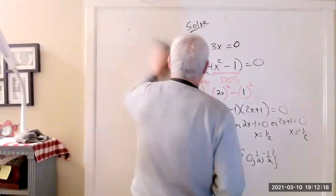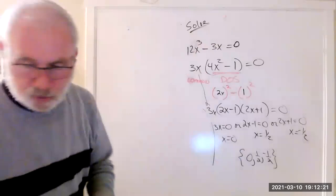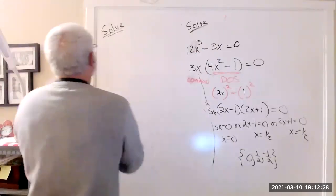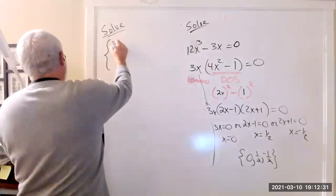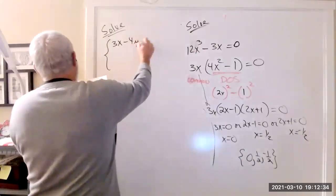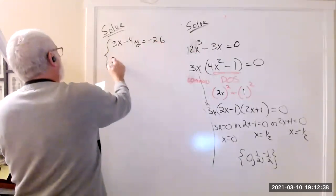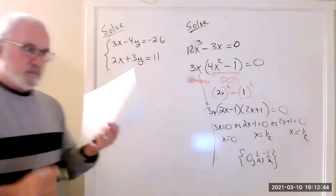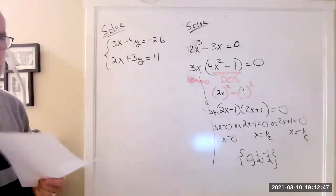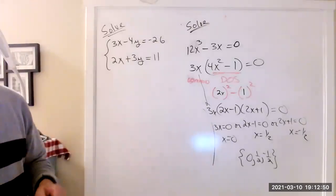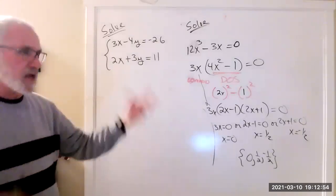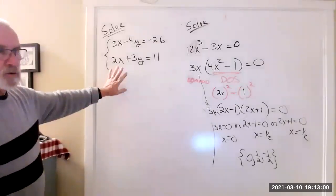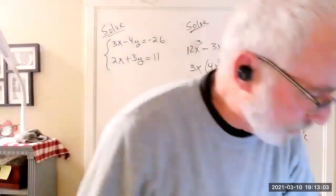Another solve problem: a 2 by 2 system of equations. 3x minus 4y equals negative 26, and 2x plus 3y equals 11. This is called a 2 by 2 system. Take a few minutes to work on it. There are three basic techniques: graphing to see where the lines cross, substitution, and addition/elimination.